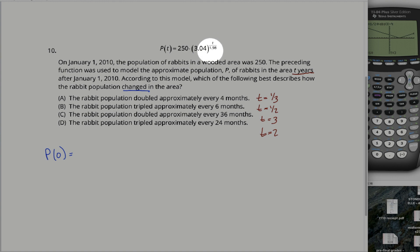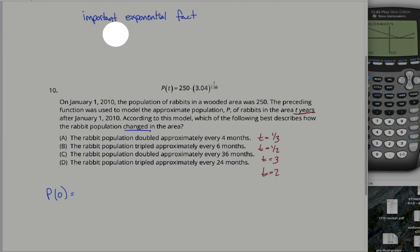Because when t equals zero, zero divided by 1.98 is zero. And 3.04 to the zero power is equal to one. That's a pretty important fact, that any number raised up to the zero power is equal to one. And if you're really nitpicky, you might argue that technically zero to the zero power is not equal to one. It's undefined. But that's not a case you're going to run into on this test. If you really want me to be precise, any non-zero constant raised up to the zero power is equal to one.